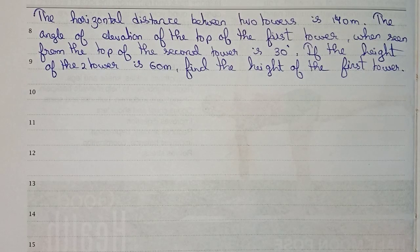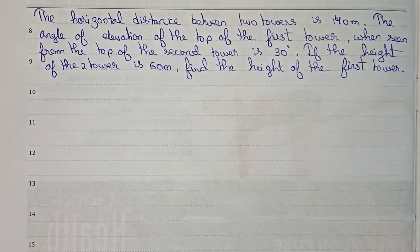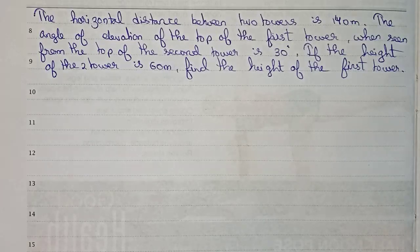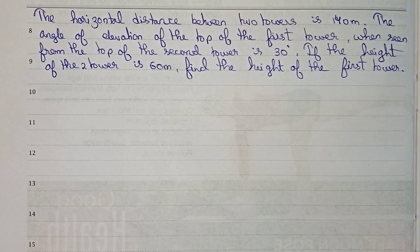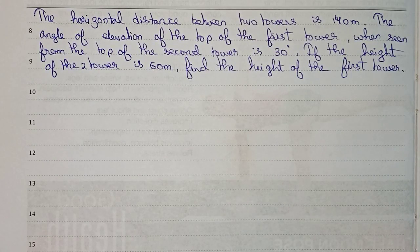Hello guys, welcome to this video. In this video our question is: the horizontal distance between two towers is 140 meters. The angle of elevation at the top of the first tower, when seen from the top of the second tower, is 30 degrees. If the height of the second tower is 60 meters, find the height of the first tower.